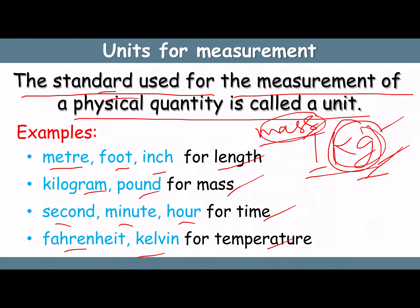Just as physical quantities are divided into two types — fundamental and derived — units are also divided into two types. The unit of a fundamental quantity is known as a fundamental unit, and the unit of a derived quantity is known as a derived unit.